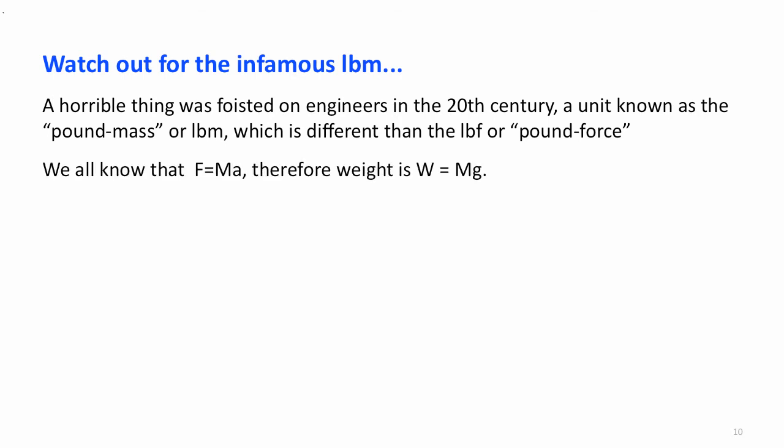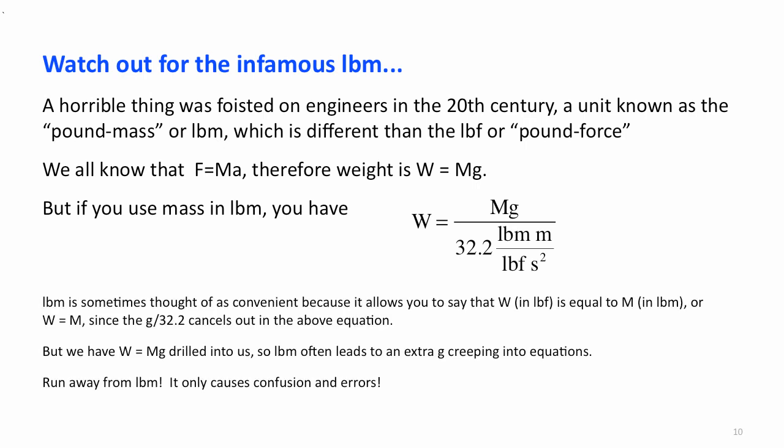So, they distinguish that from a pound mass in the following way. We know that F equals ma, and weight is equal to mass times gravity. That's our standard approach to relating those. But, if you're going to use a pound mass, then what you have is that the weight is mass times gravity divided by 32.2 pound mass meters per second squared per pound foot. Now, some people think this is convenient because it allows you to say that the weight in pound force is equal to the mass in pound mass, or W equals M, since the g over 32.2 cancels out.